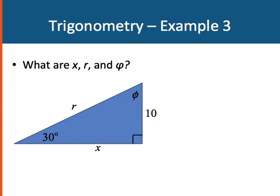Let's look at one more example. Here we have a triangle and I have some unknown values. I don't know what r is. I don't know what phi is. I don't know what x is. I'm given that it's a right triangle. I know that one angle is 30 degrees and one side is 10.